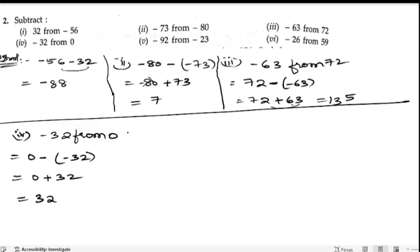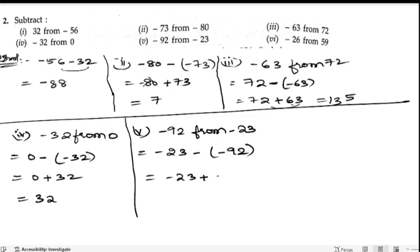Next, fifth bit: -92 from -23. So first we will write down -23, then minus of -92. So -23 minus into minus is plus 92. Now let us subtract. 92 is greater, so we will borrow 1 from 9 and this will become 12. 12 minus 3 is 9, and 8 minus 2 is 6. Since the bigger number is positive, that's why we will keep it positive.